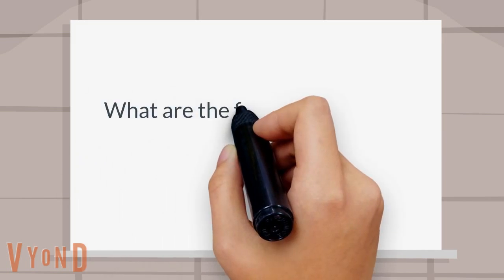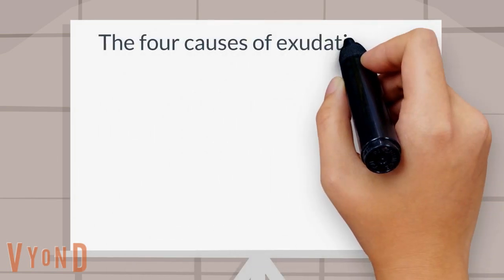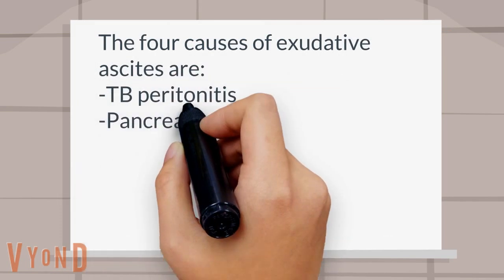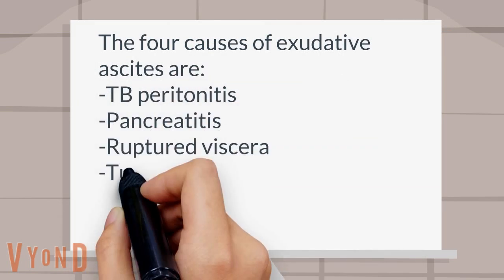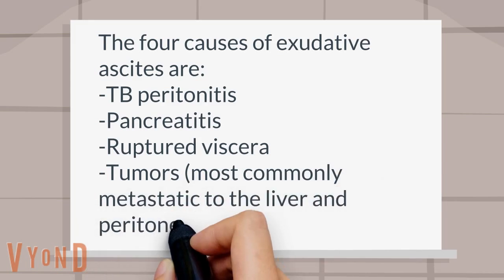What are the four causes of exudative ascites? The four causes of exudative ascites are TB peritonitis, pancreatitis, ruptured viscera, and tumors, most commonly metastatic to the liver and peritoneal cavity.